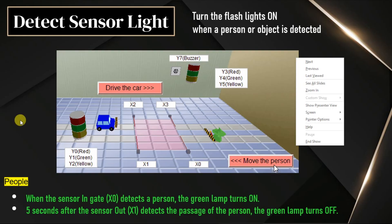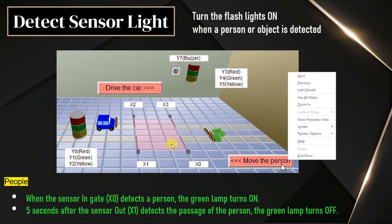In this video, we will discuss object detection using PLC ladder logic. If you see in the picture, we have two paths: Path 1 and Path 2. Path 1 is for people, and Path 2 is for cars.